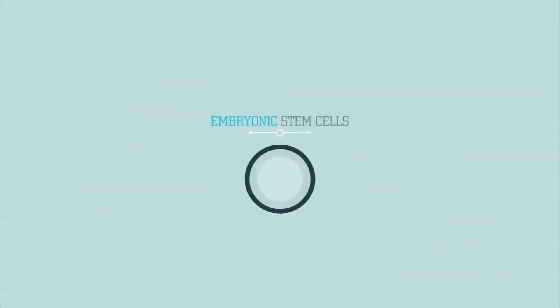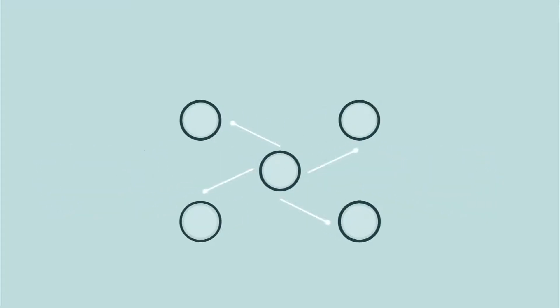Embryonic stem cells are created from leftover embryos that are willingly donated by patients from fertility clinics. Unlike tissue-specific stem cells, embryonic stem cells are pluripotent. This means that they can be grown into any kind of tissue in the body.